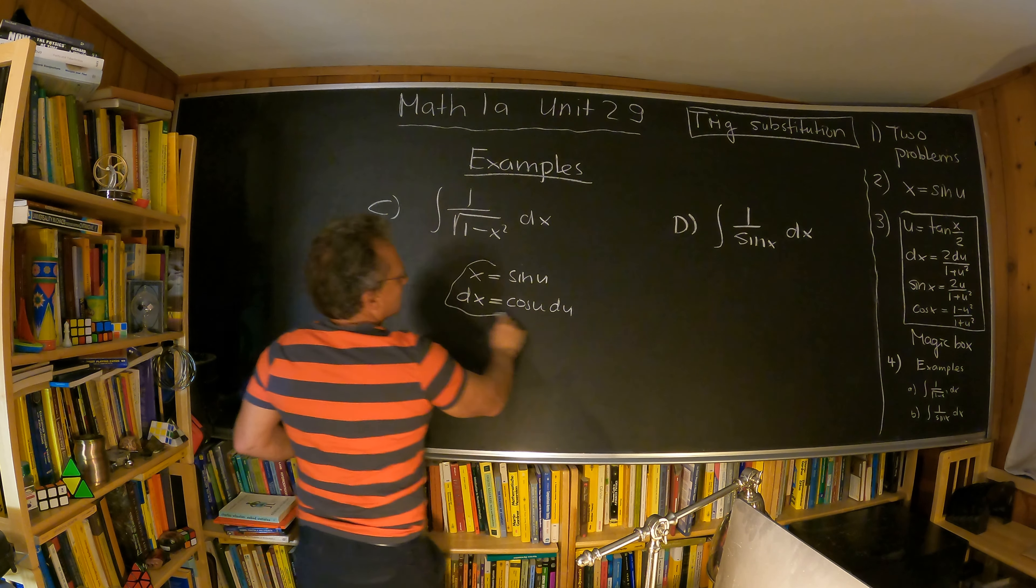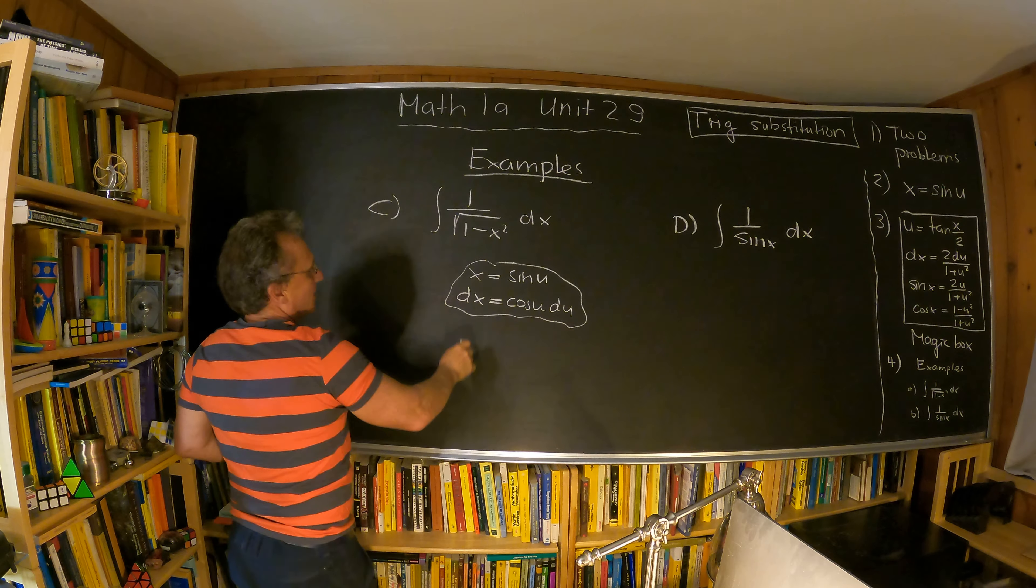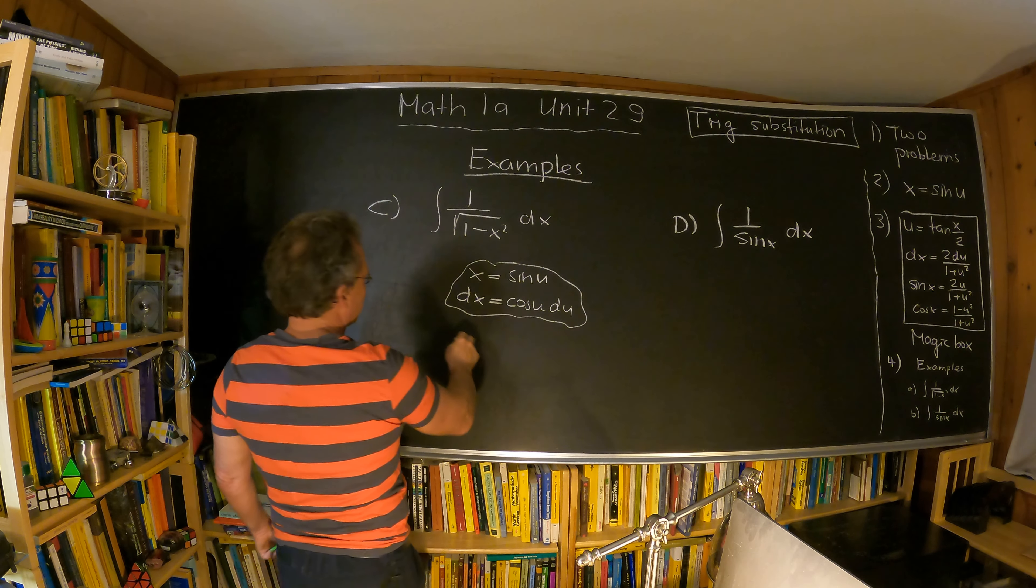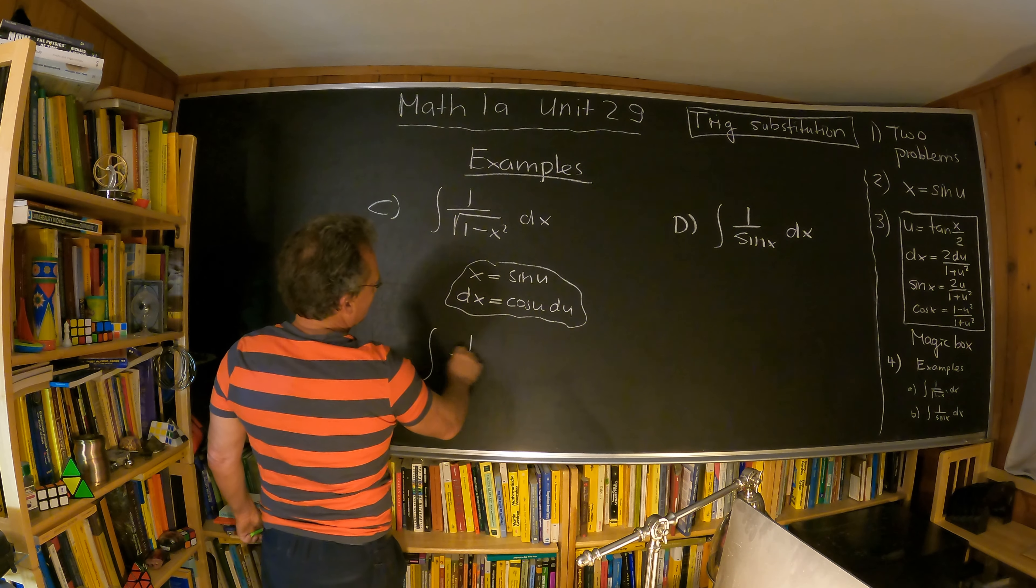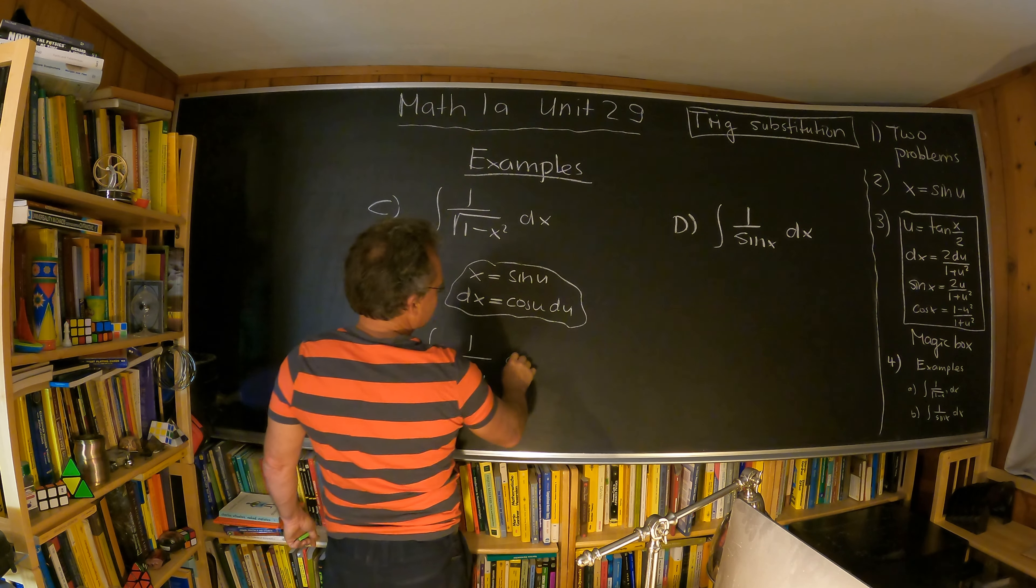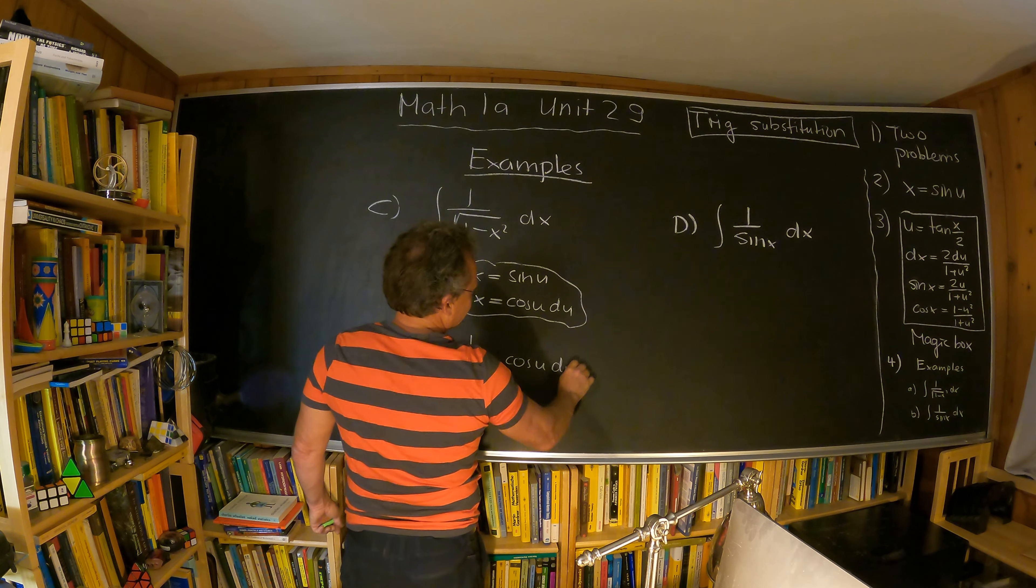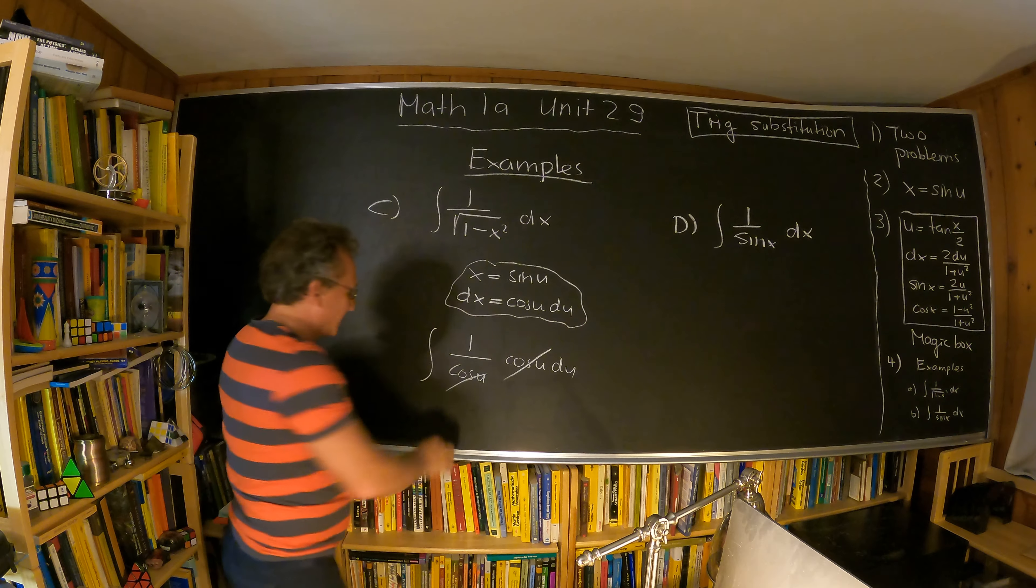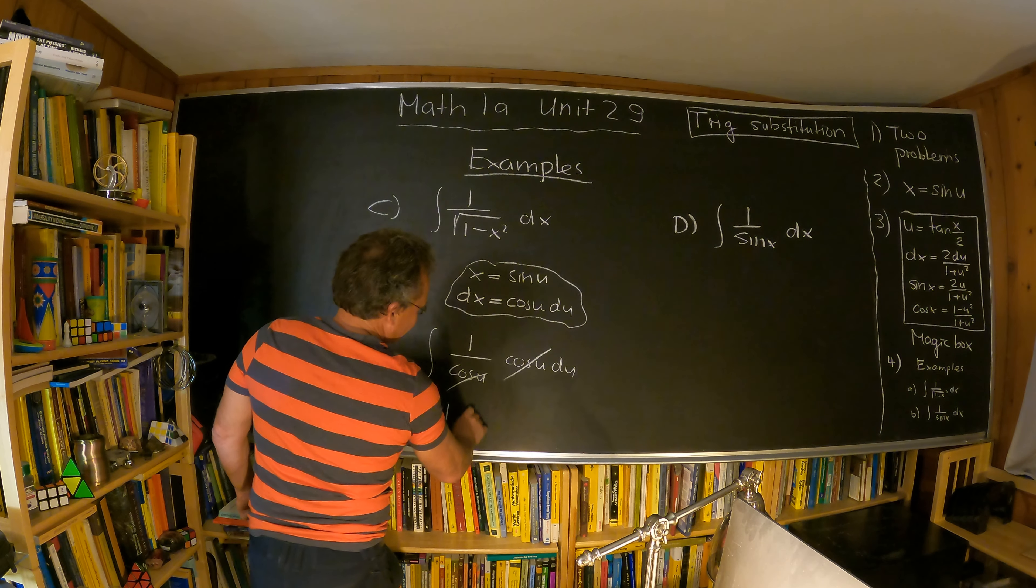That is our substitution, and again the square root of 1 minus x square equals cosine u. So what we have is 1 over cosine u, and dx is cosine u du. That cancels away, and so we have the integral 1 du, of course that's u plus c.